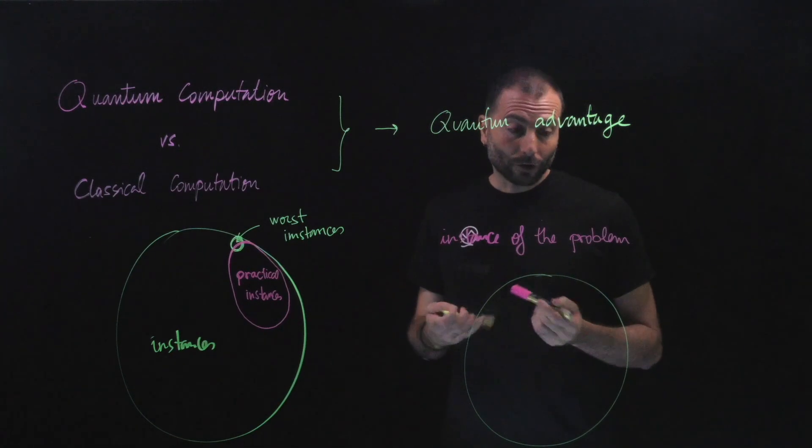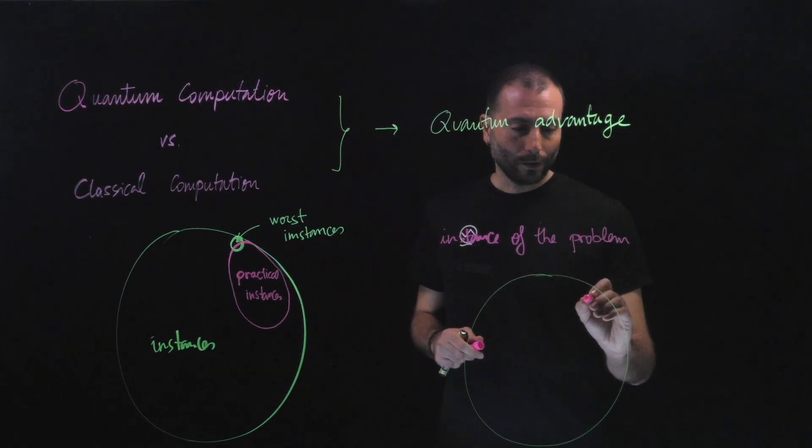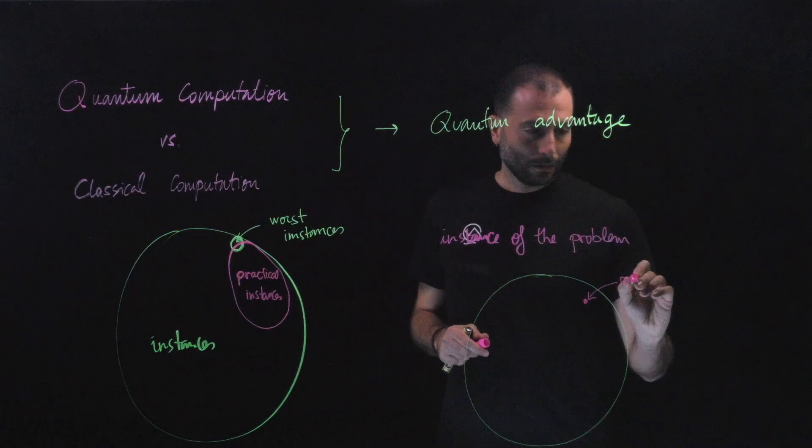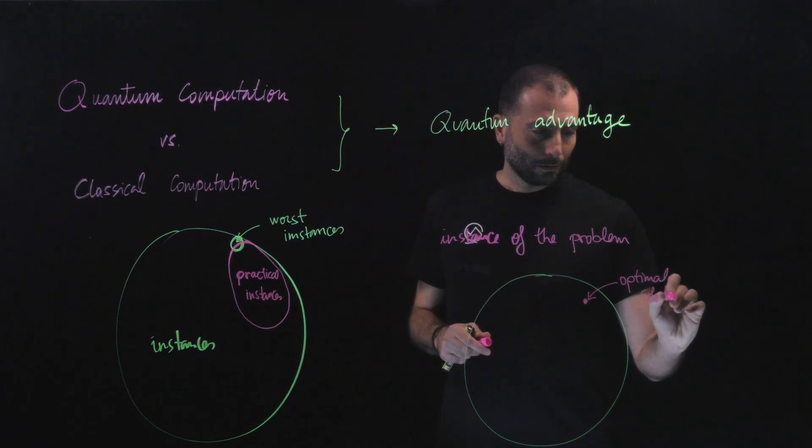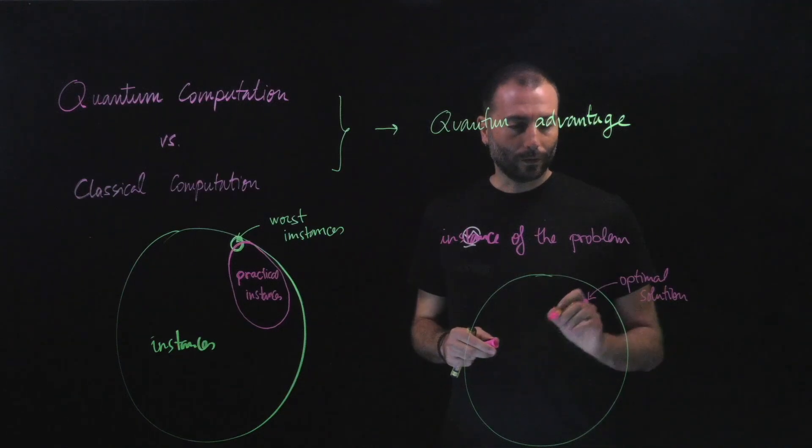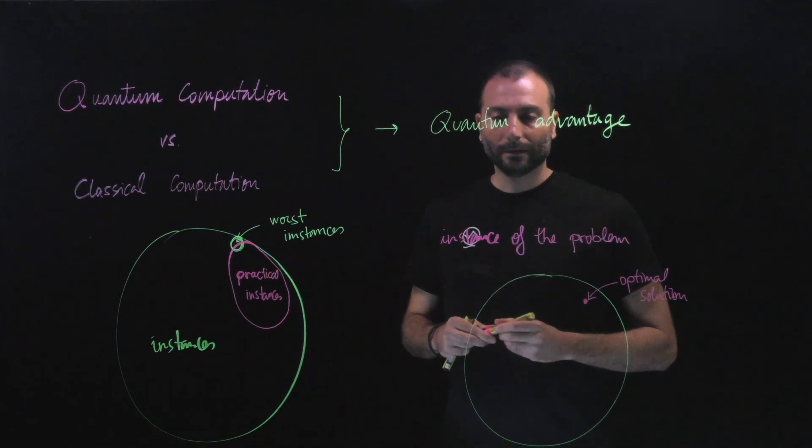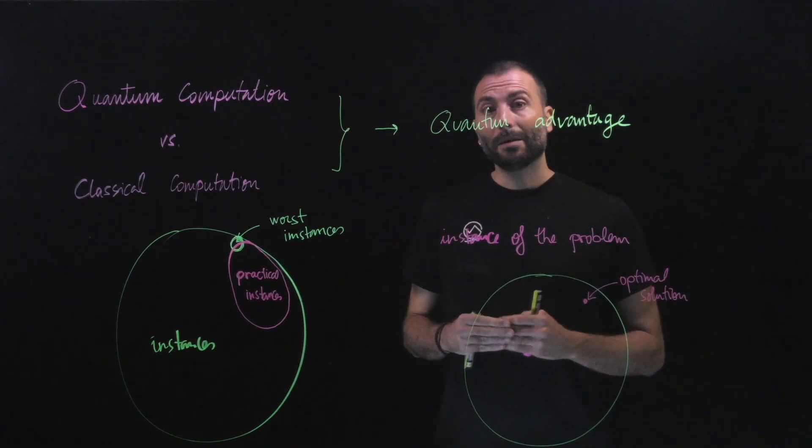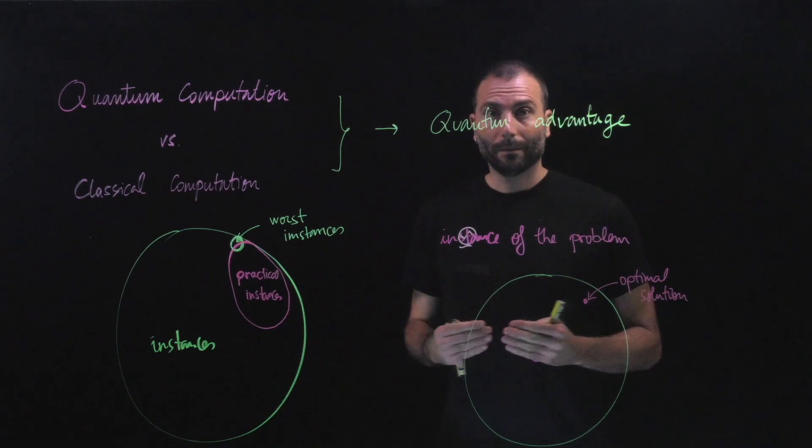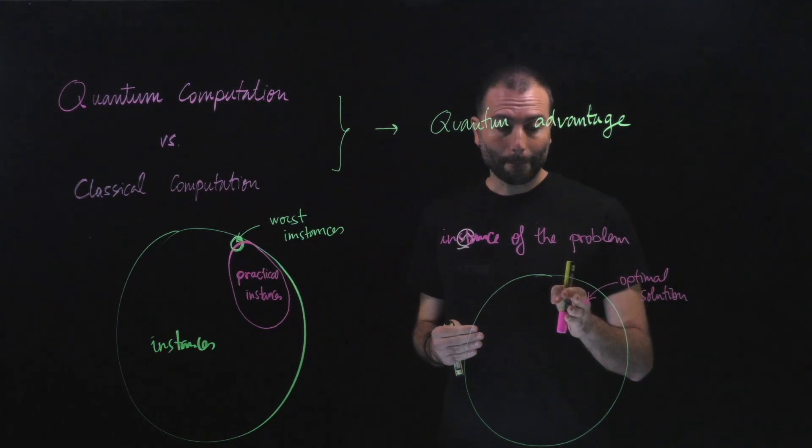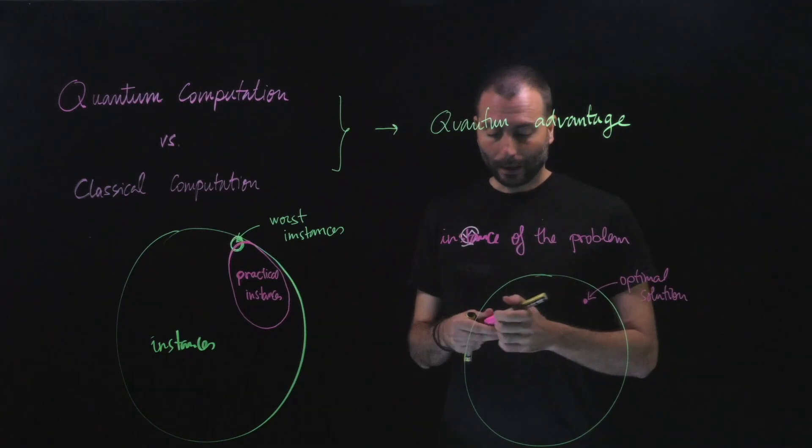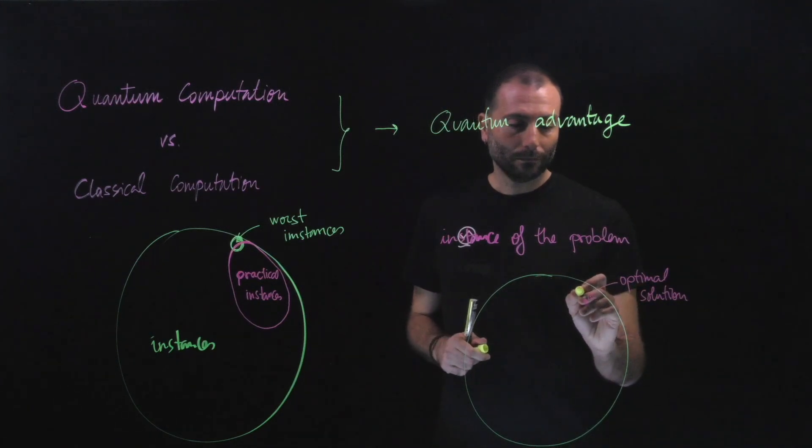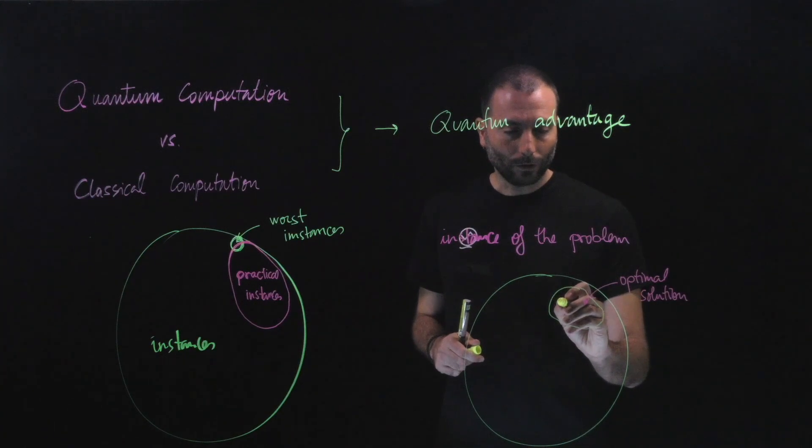We have a solution, which is the optimal solution that we would like to find. In practice, maybe to solve our problem it's not necessary to find the best solution, but to find a solution that is good enough. Let's say that this set up here is a good solution.